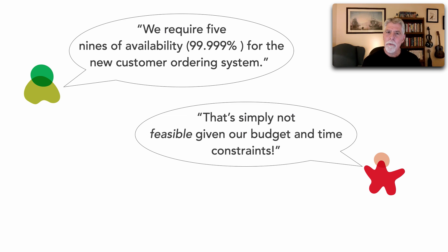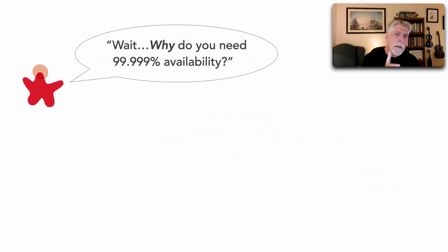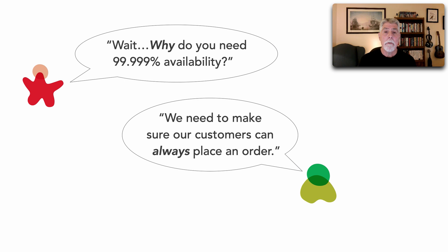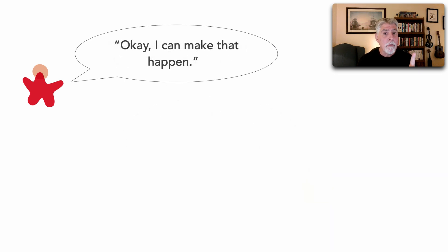To resolve this problem, we do the same thing the design team did with the F-16 fighter — we ask "why." Why do you need five nines of availability? It turns out the response from the product group is, "We need to make sure our customers can always place an order 24/7. That's what we need." Just like the design team, the architect says, "Oh, I can make that happen."